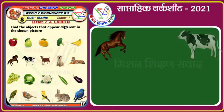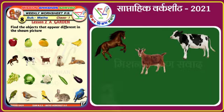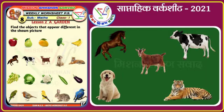And in this picture there are horse, cow, goat, dog, and tiger. Horse, goat, cow, and dog are animals we keep at home. But tiger lives in the jungle. So tiger will be the odd one out.